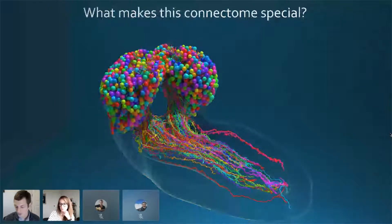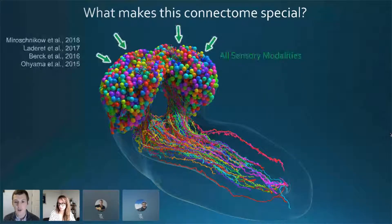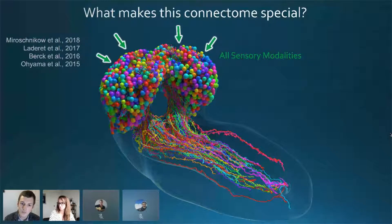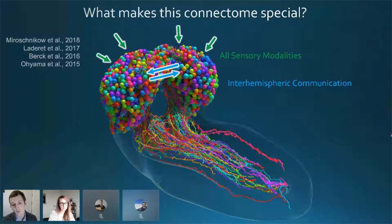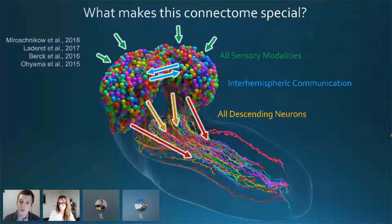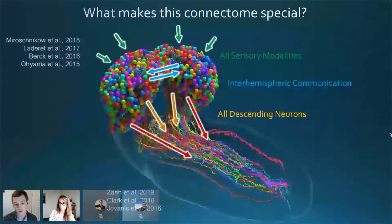What makes this connectome special? Because we've had this EM volume of the whole CNS for years, many groups have been working on it collaboratively. We already had reconstructed all sensory neurons and knew their modalities. Because we have both brain hemispheres reconstructed, we can examine comprehensive interhemispheric communication. And because these hemispheres are attached to a full CNS volume, we reconstructed all descending neurons and tracked where they went throughout the nervous system. With this connectome, we can follow sensory signal through computations in the brain and track behavioral outputs emitted by descending neurons, even down to motor neurons in the nerve cord.